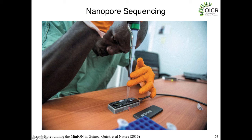It's roughly the size of a smartphone — you plug it into your computer with a USB 3 cable, bring it to wherever you need to sequence, and you can do sequencing directly in the field on site. This sort of inverts the paradigm of how genome sequencing is done, as usually you collect samples and ship them to a genome institute like the Broad Institute or here at OICR, where they're sequenced centrally in a factory-style operation, and then you disseminate the results back to whoever collected the data.